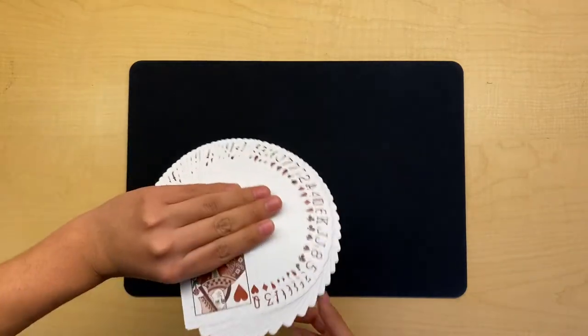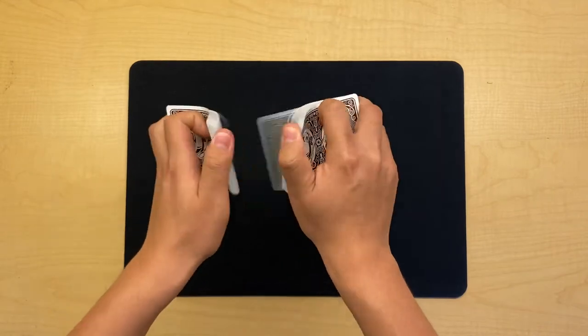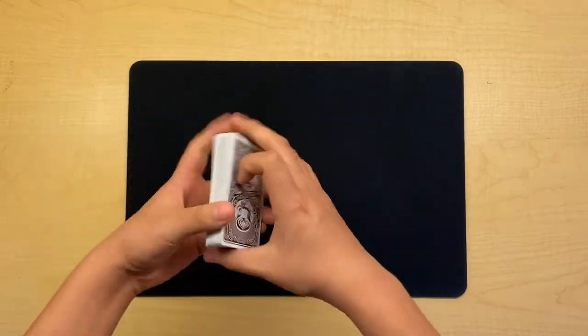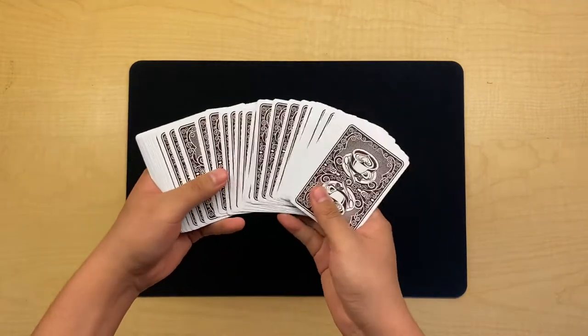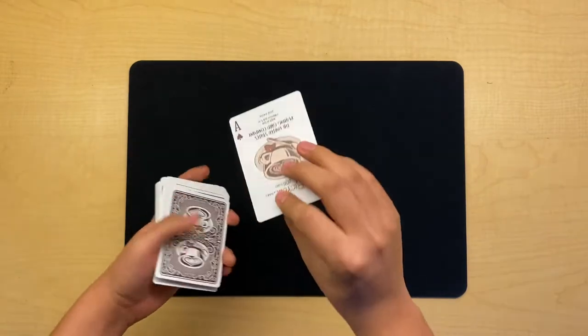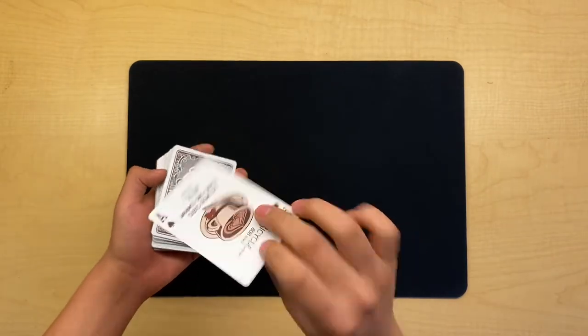But first you can see all the cards are all different. So I'm going to perform a little trick. I don't have a spectator with me here, but if I did I would ask them to go ahead and pick out any card they want. So let's go and see what this one is. This is the ace of spades.